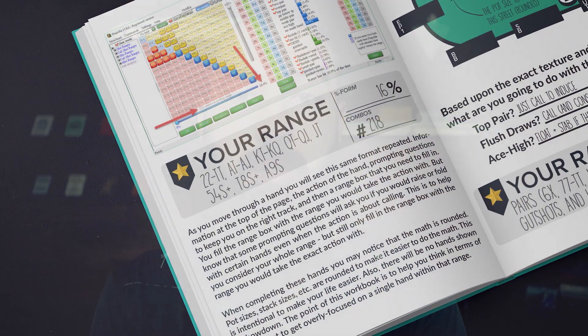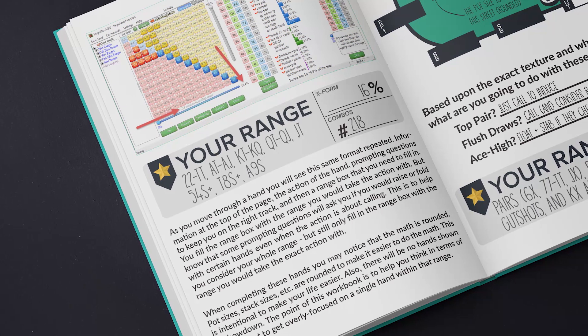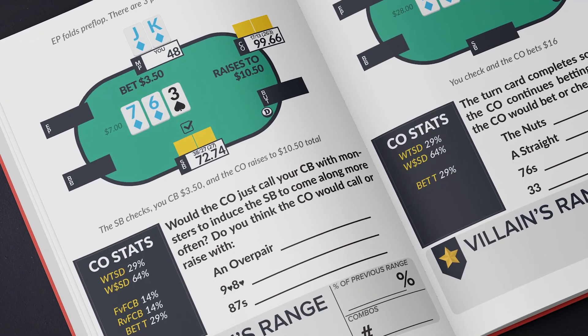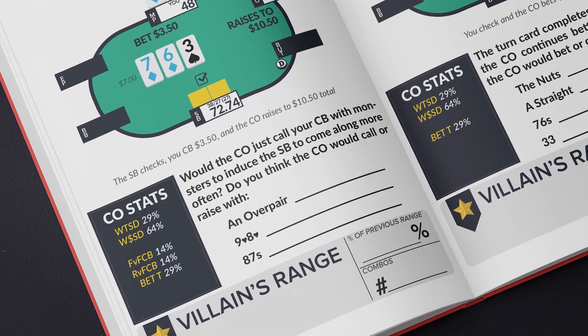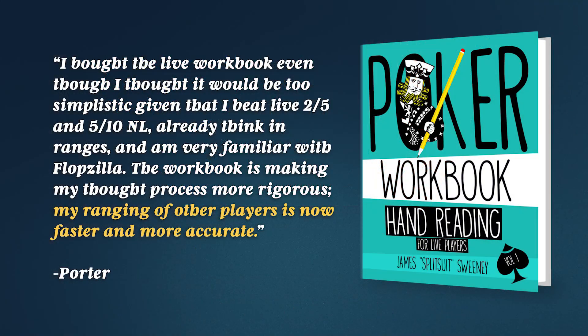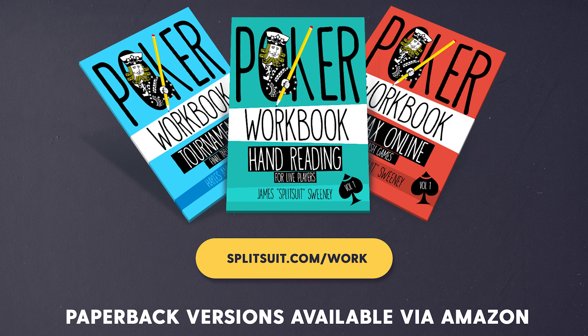One of the absolute best ways to get more out of Flopzilla and use it in a more systematic way is to use it alongside one of my workbooks. Each workbook is set up to help you work on your own range construction, hand-reading your opponents, and looking at things through a range versus range point of view. Each workbook has a Flopzilla edition which includes a lifetime license good for up to two machines, plus my Flopzilla range presets. Visit splitsuit.com/work and use the code YOUTUBE to save $10 off any workbook plus software edition.